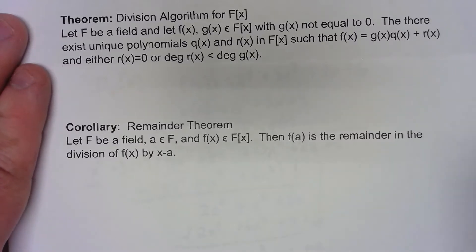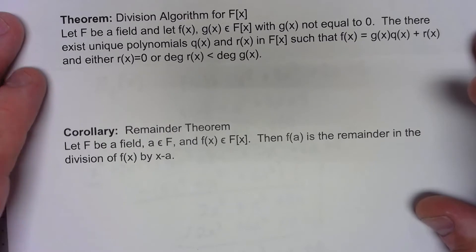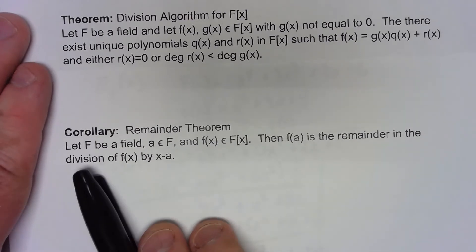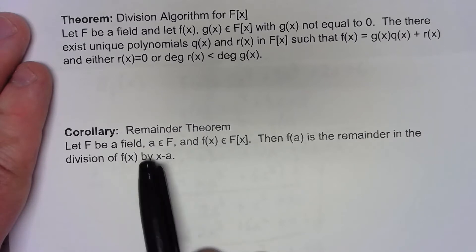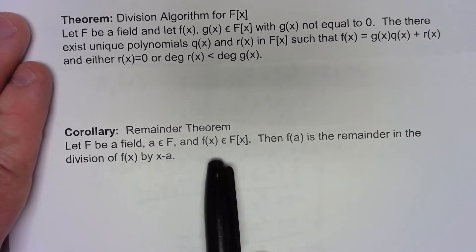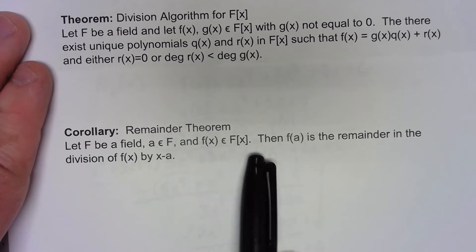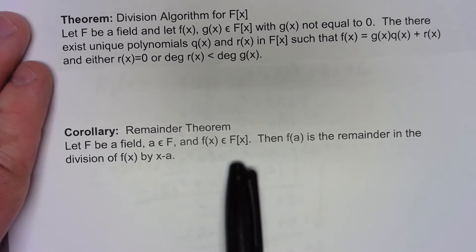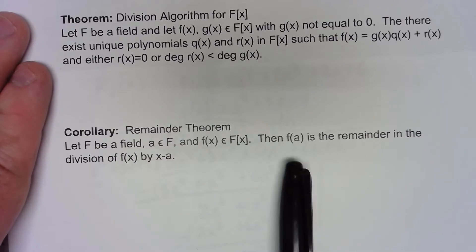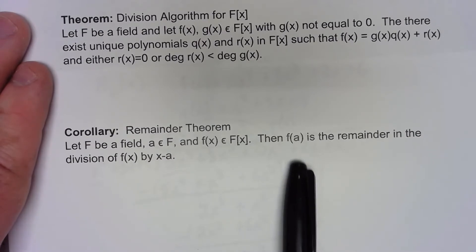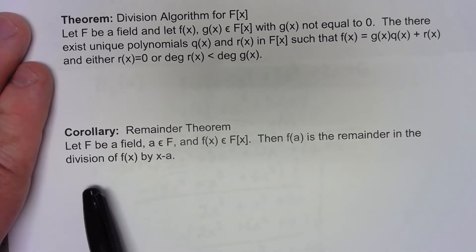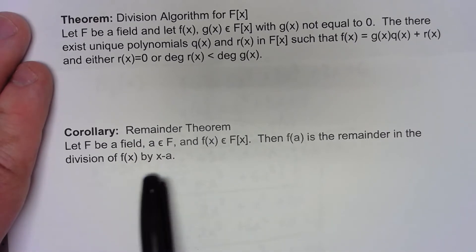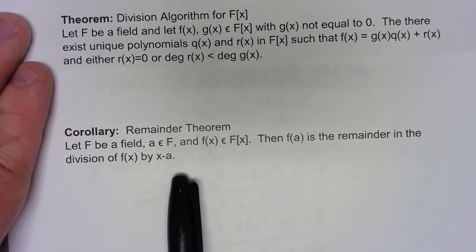Let's take a look at a couple of consequences of the division algorithm. So let's say we've got a field, we've got some element of that field, and we've got some polynomial in the polynomial ring with coefficients from that field. Then what I'm going to claim is that if I evaluate that polynomial at A, I get the remainder that I would get when I divide the polynomial by x minus A.